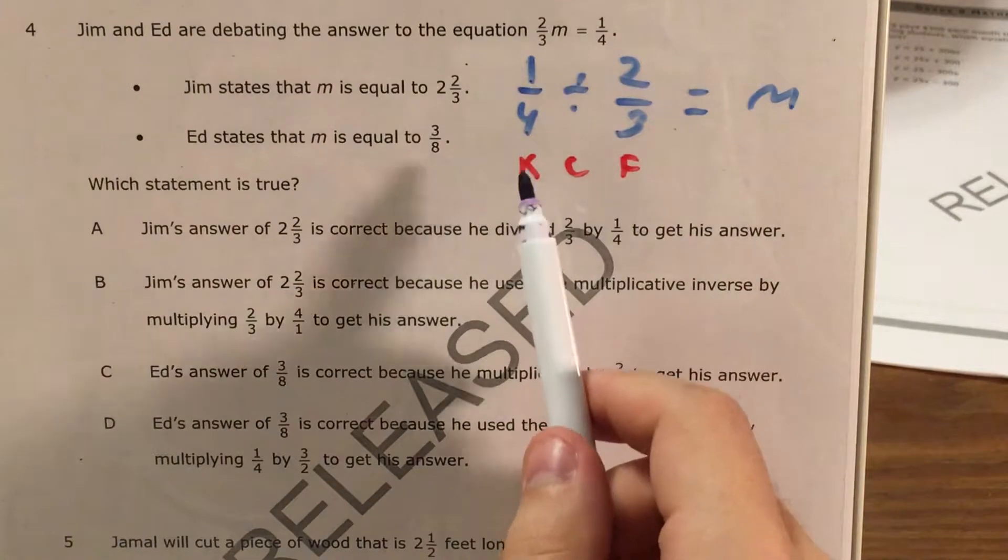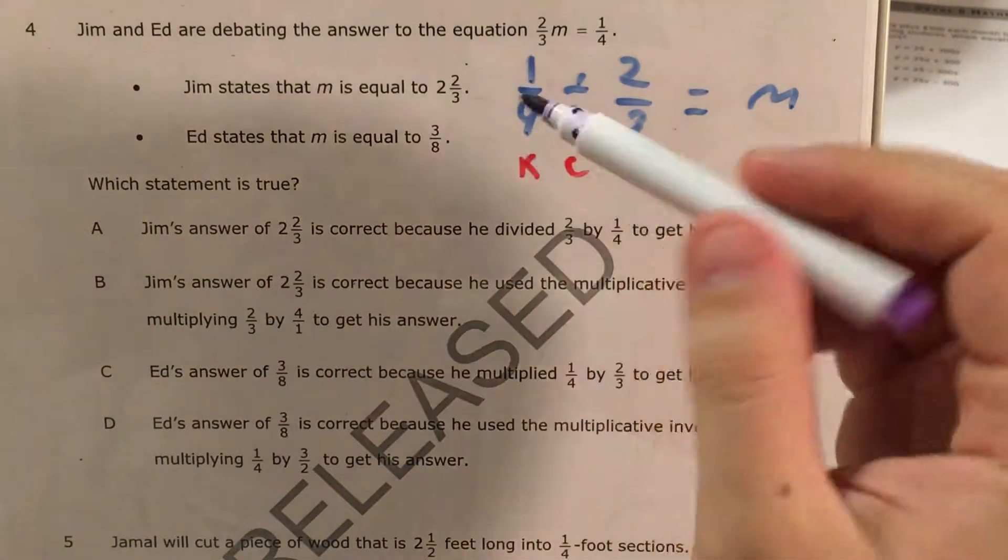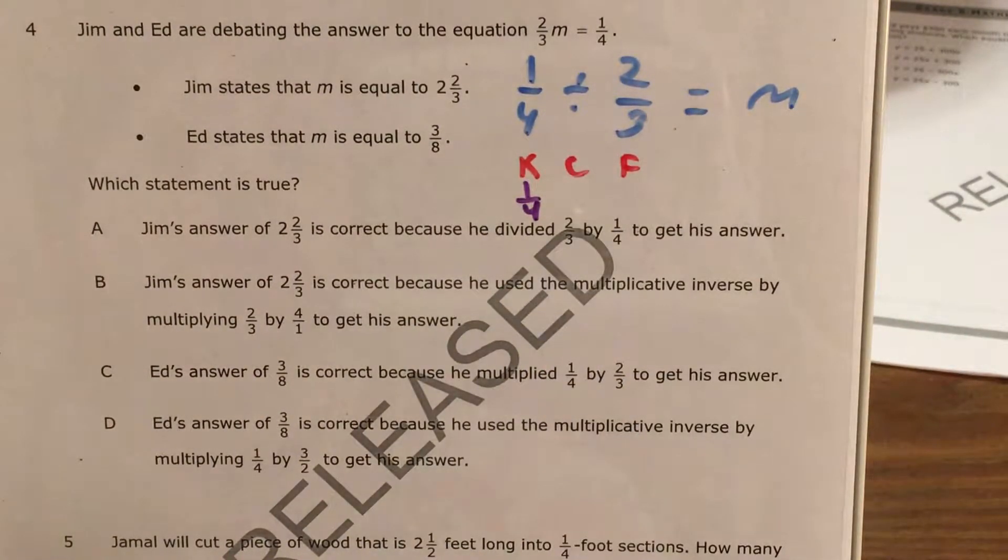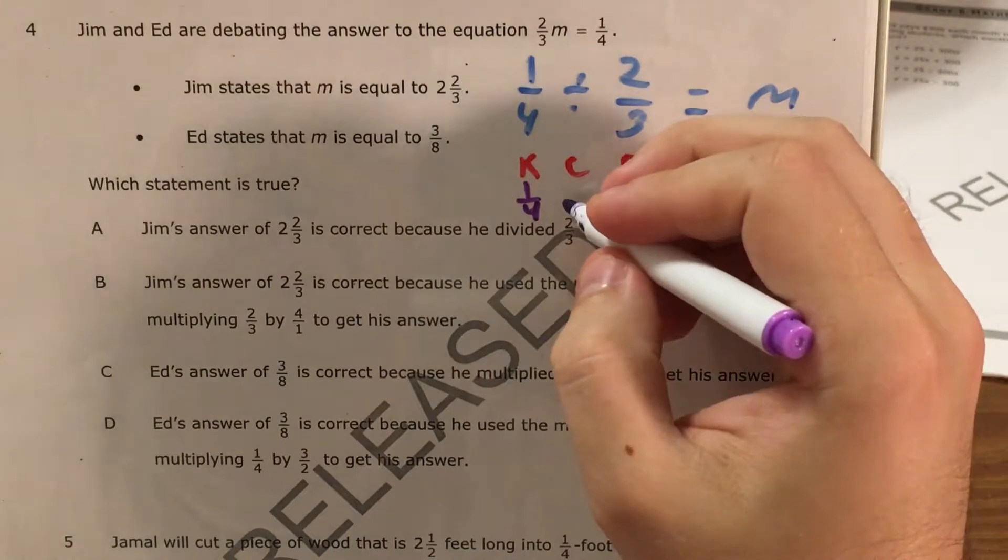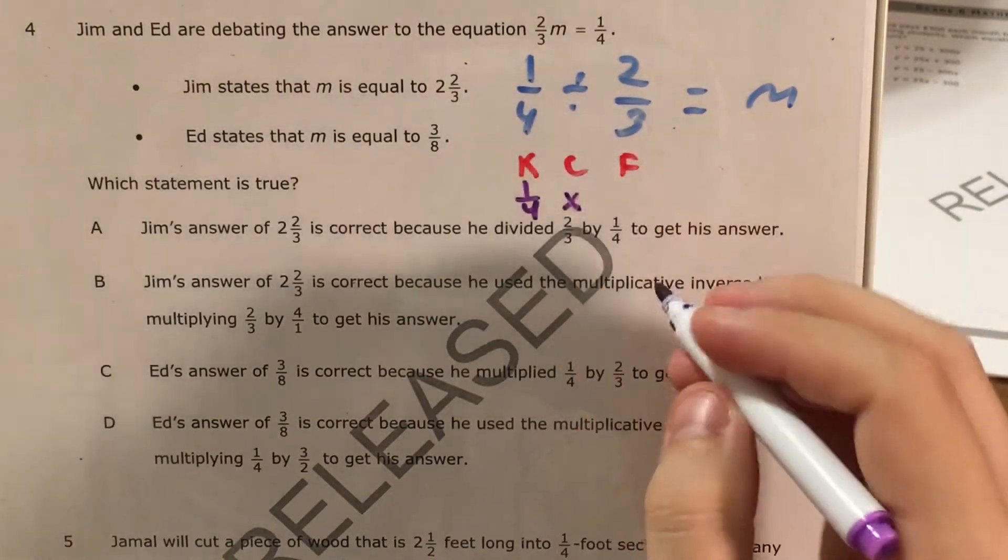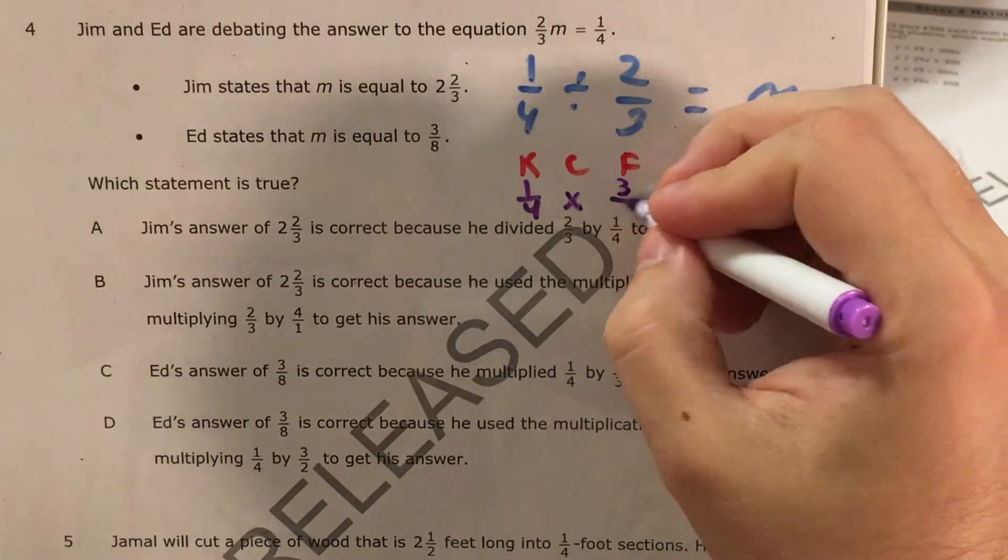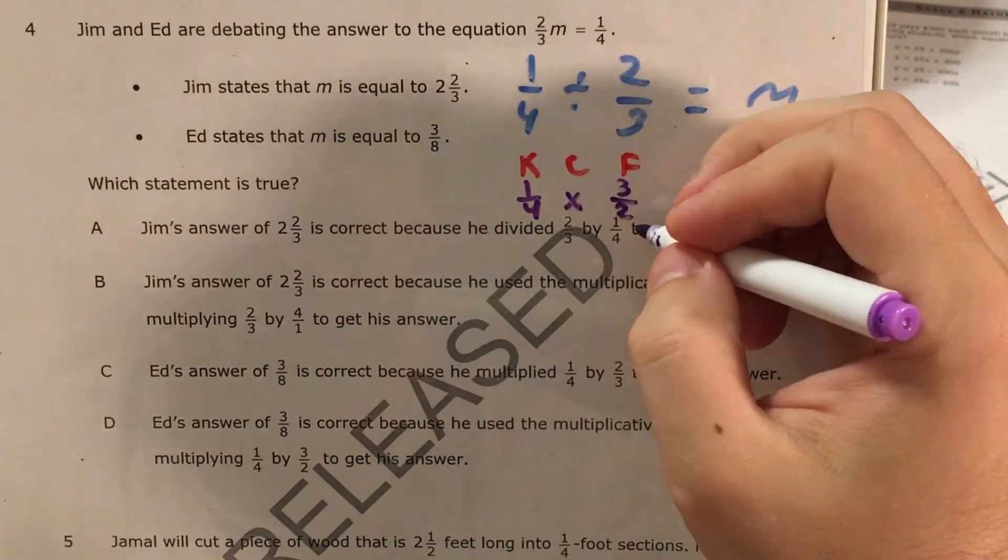Because when I see my k, k stands for keep, and that means that I'm going to keep one-fourth the same. When I see c, that means change, which means I'm going to change dividing into multiplying. And then I see f, and f tells me to flip. So I flip two-thirds over into three-halves.